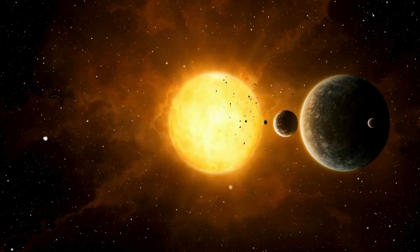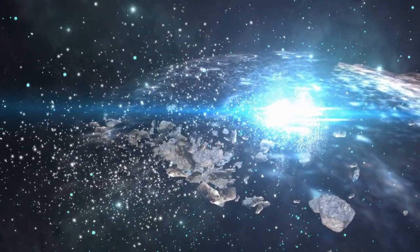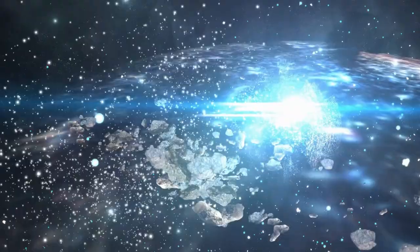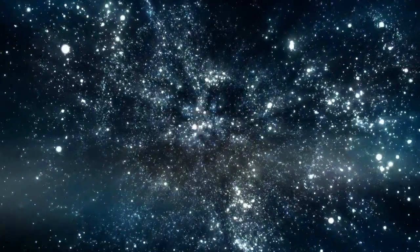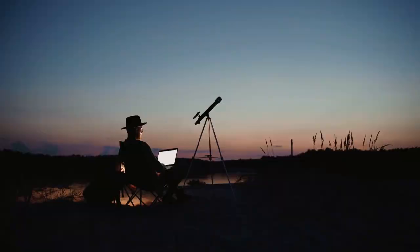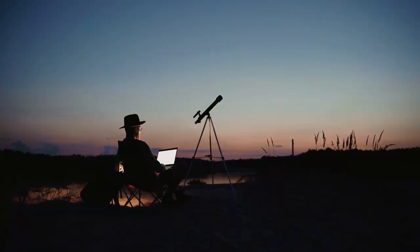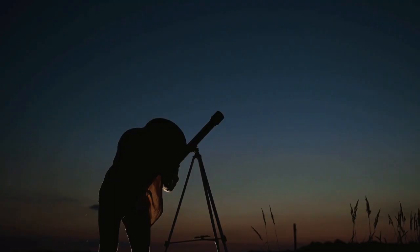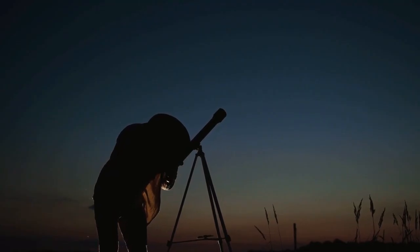Gravity bends the fabric of space-time, causing light to follow curved paths through the cosmos. This phenomenon, called gravitational lensing, transforms massive galaxies into natural telescopes, magnifying distant objects that would otherwise remain forever invisible.